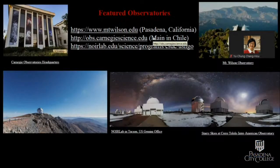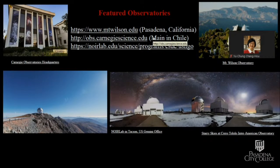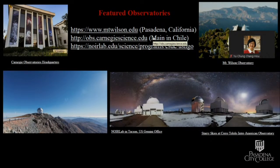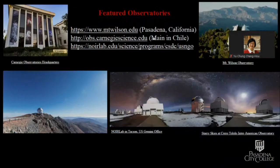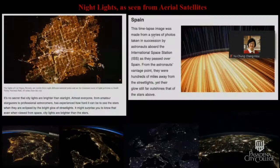I wanted to prelude with the fact that even though this is not considered mathematical science in the strictest sense, we are using data from astronomical observatories — for example, Mount Wilson, which you might know in terms of Caltech, Carnegie Science Observatory, NOIR Labs in Arizona, and one in Chile. These are the observatories whose data contributes to this presentation.